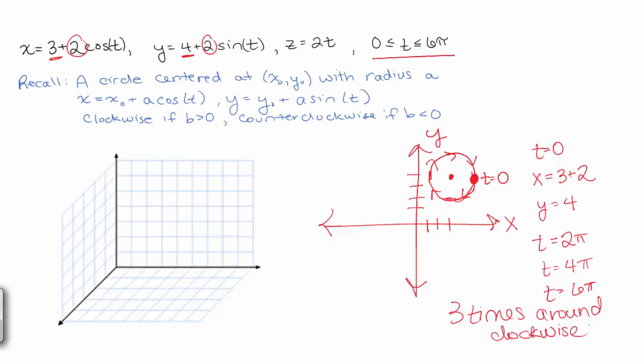That makes sense. But what does the z do? So z is 2t. That means when t equals 0, z equals 0. And then it's progressively getting bigger and bigger until it gets to 12 pi. So what is 12 pi? Well pi is about 3, right? So 36 or 40.